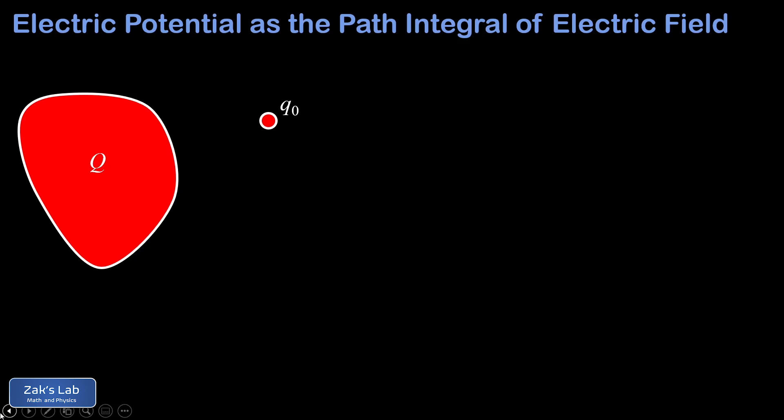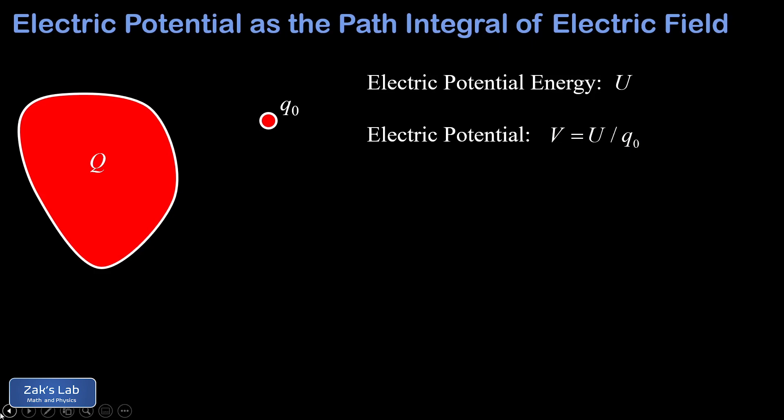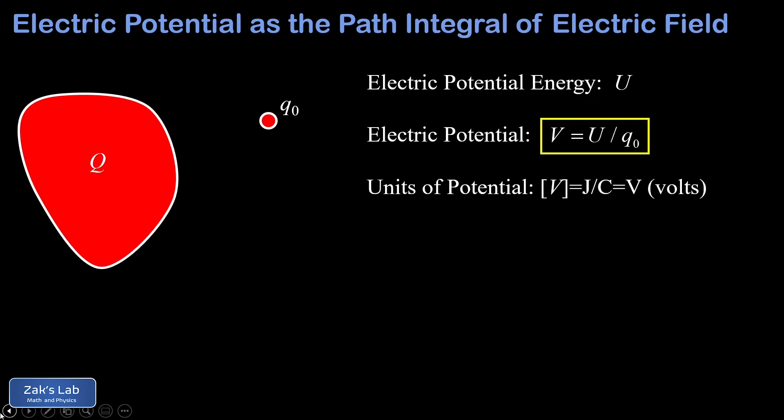To define electric potential, we start with a test charge q0 near some arbitrary distribution of source charge. The test charge has some electrical potential energy due to its proximity to the source, and we call that U. The electric potential is defined as the potential energy per unit charge, and we give that the symbol V. So V is U over q0. The units of potential are joules per coulomb, and this gets the special name of volts. One way to describe the electric potential is that it's telling us how many joules of potential energy there would be if we stuck an entire coulomb of charge at that location.